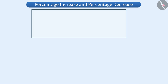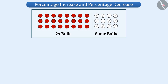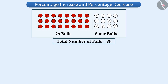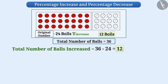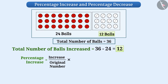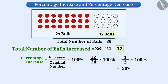Now let's learn about percentage increase and percentage decrease. In the box there are 24 balls. After putting some white balls, the total increased to 36, an increase of 36 minus 24 equals 12. Since the original number has increased, we take the original number as base. The percentage increase is 12 divided by 24 multiplied by 100 percent, equal to 1 divided by 2 multiplied by 100 percent, equal to 50 percent.